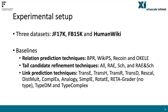In our experiments, we use three popular knowledge graph datasets: JF-17K, FP-15K, and HumanWiki. JF-17K and FP-15K are extracted from Freebase, while HumanWiki from Wikidata, by extracting all triplets involving a head entity of type Human.